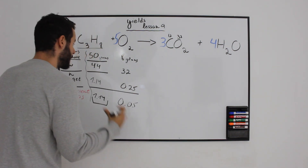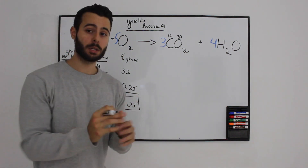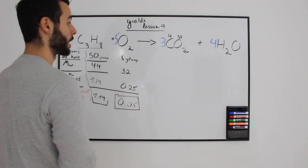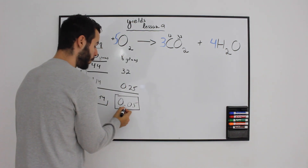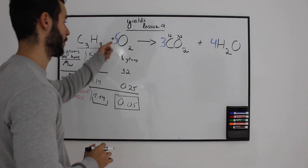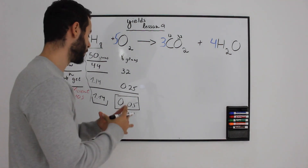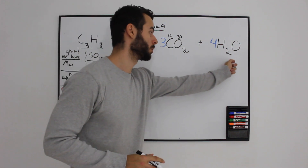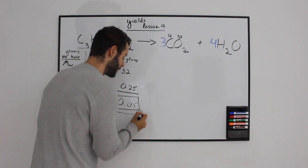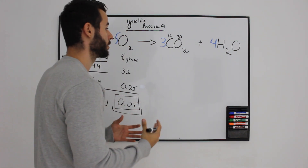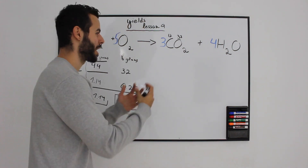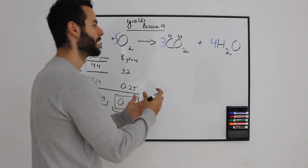The limiting reactant is oxygen with a coefficient ratio of 0.05 moles, meaning only 0.05 moles of oxygen will be able to react with propane. Now let's see how we can get the amount of products. Because of the limiting reactant, if we have 0.05 as the coefficient ratio of oxygen, to get the actual moles of carbon dioxide and water, we take the amount of the limiting reactant and multiply by the coefficient of each product.